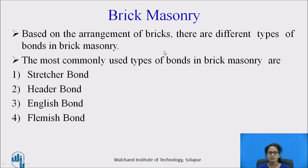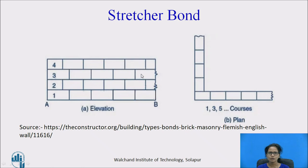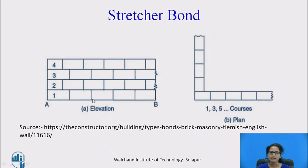Next we have brick masonry. Based on the arrangement of bricks, there are different types of bonds: the stretcher bond, header bond, English bond, and Flemish bond. In the stretcher bond, the longer face of the brick is called the stretcher and the vertical face of the wall is called the header. Each course is numbered 1, 2, 3, 4, and so on. This bond is used for a 9 cm thick wall; if the wall thickness is more than 9 cm, this bond is not used. The bricks are laid with their length in the direction of the wall.